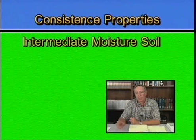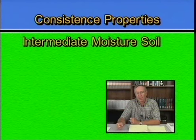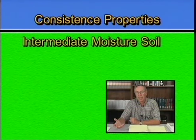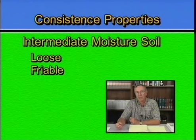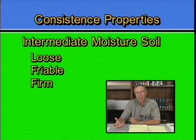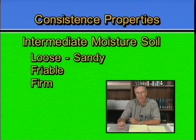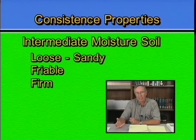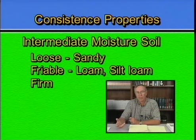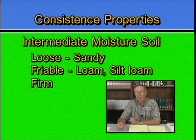If a soil is in an intermediate range of moisture — where it feels moist but won't hold together into a ball — the consistence is described using one of three terms: loose, friable (F-R-I-A-B-L-E), or firm. A loose consistence is indicative of a very high sand content, causing the soil not to be cohesive in this moist state. A friable consistence is more typical of loam or silt loam soils with appreciable organic matter; they form semi-stable aggregates that crumble apart into a crumb-type soil structure at the surface.